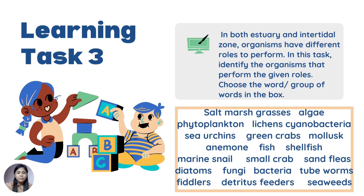For learning task number three, in both estuaries and intertidal zones, organisms have different roles to perform. In this test, identify the organism that performs the given roles. Choose the word or group of words in the box: salt marsh grasses, algae, phytoplankton, lichens, cyanobacteria, sea urchins, green crabs, mollusk, anemone, fish, saltfish, marine snail, small crab, sandflies, diatoms, fungi, bacteria, tube worms, feeders, detritus feeders, and seaweeds.